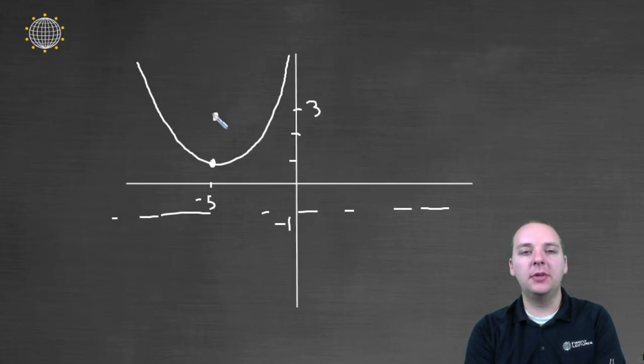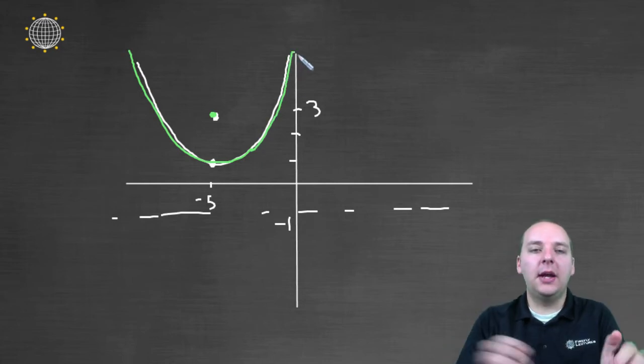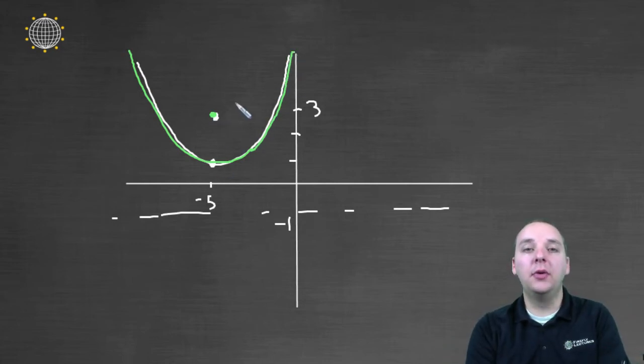So once you have the focus, once you have the directrix, you plot all those. And then the parabola will go through the vertex, bending away from the directrix and around the focus, almost like a satellite dish, if you will.